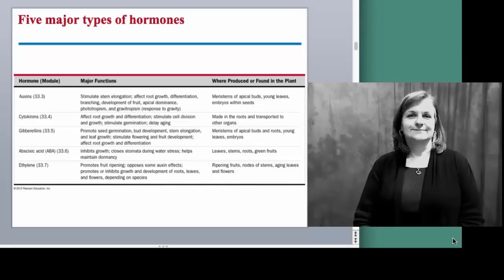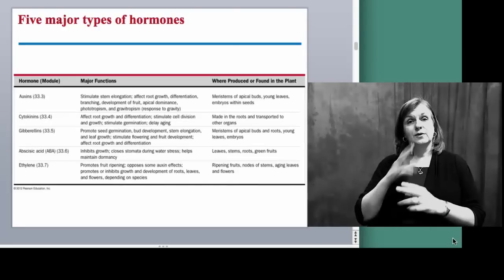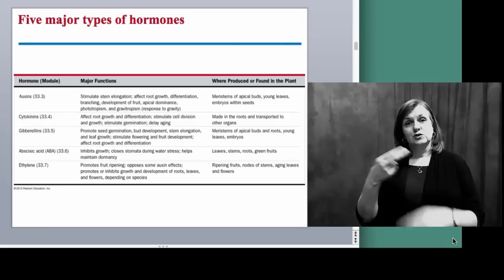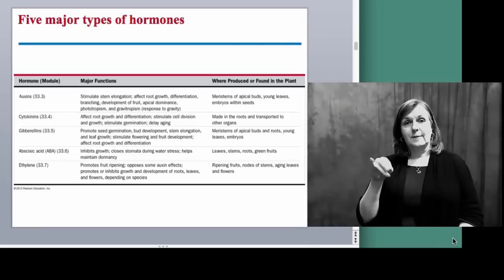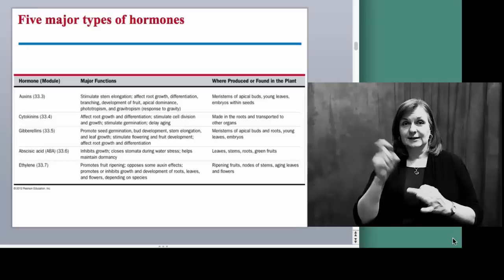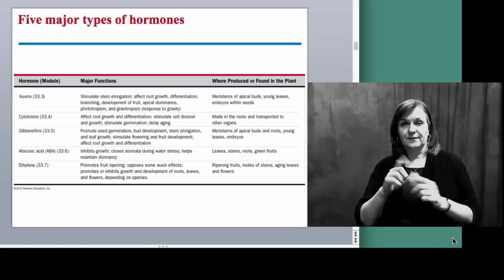We've discussed very briefly five major different types of hormones. They're given to you here on this figure in case you need to refer to spellings. Our first focus today will be on auxins.